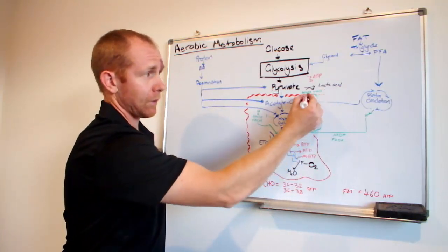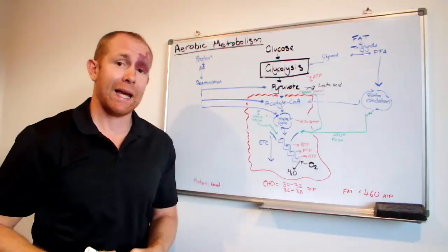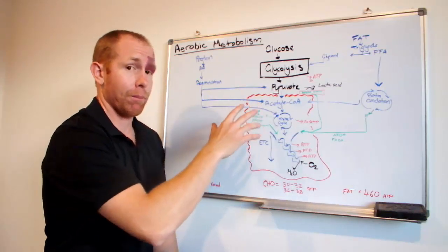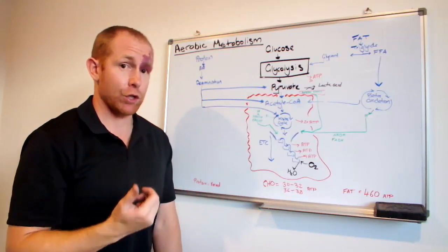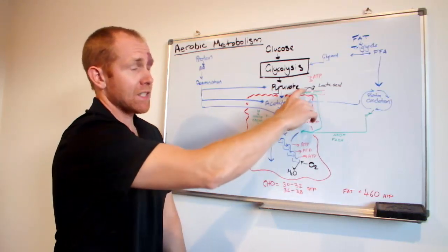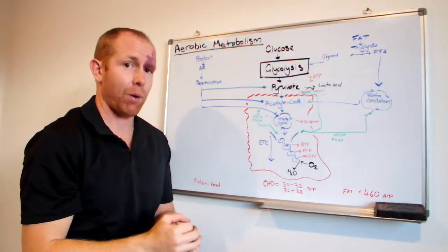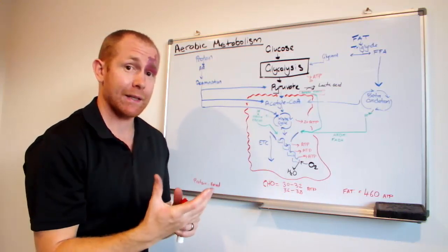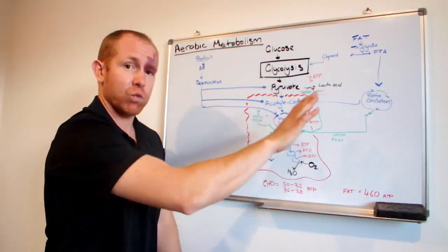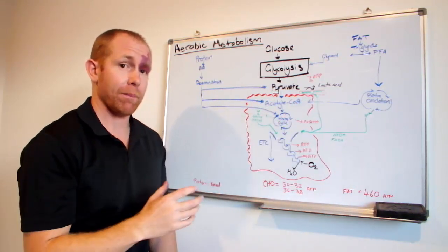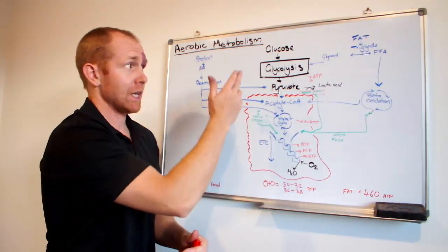Looking back up here, when we talked about lactic acid production from pyruvate, the reason that lactic acid is produced is because there's a hydrogen ion attached to that pyruvate, pyruvic acid. And if there's no oxygen available, then that is a way of getting rid of that hydrogen ion so that the body can keep making energy anaerobically.